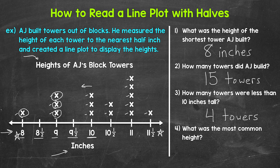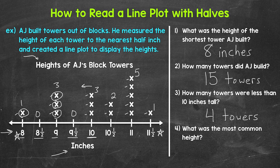Lastly, number four: what was the most common height? In other words, which height occurred the most number of times? Eight inches occurred once, eight and a half inches occurred zero times, nine inches occurred three times, nine and a half inches occurred zero times, ten inches occurred three times, ten and a half inches occurred two times, eleven inches occurred five times, and eleven and a half inches occurred once. So the most common height was 11 inches — it occurred five times, meaning five towers were 11 inches tall.